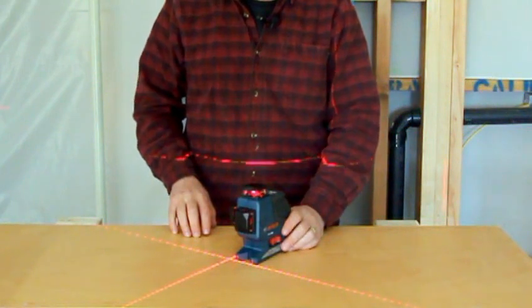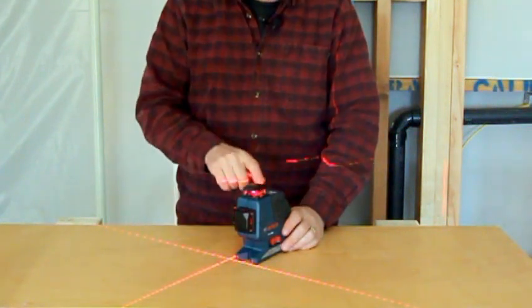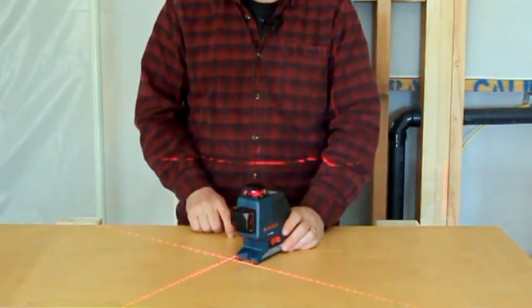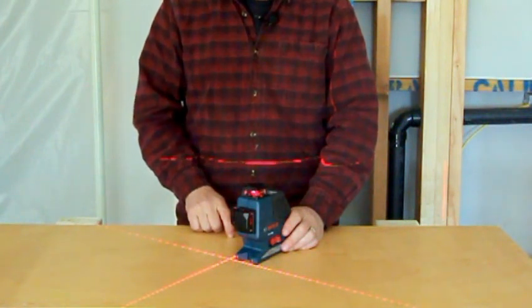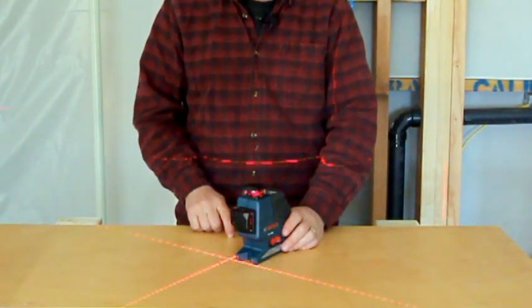This tool has the ability to work with a detector. You can hit this button and it gives you the pulse function. The detector you've got to buy separately. It's about $180.